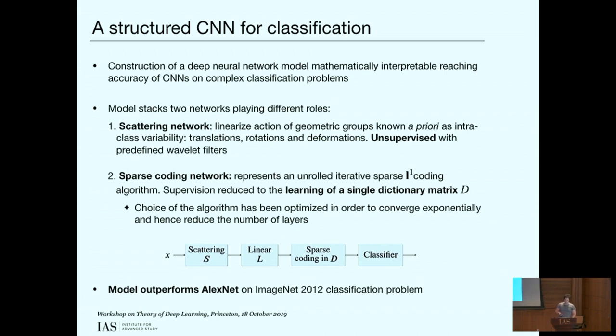To achieve this, we stack two networks playing different roles. The first network is a scattering network whose role is to reduce geometric variability of inputs which may not be informative like translation, rotation, and deformations by linearizing the action of those groups. This network is unsupervised and its weights are predefined wavelet filters. The second network is a sparse coding network, which represents an unrolled iterative sparse coding algorithm. There is supervision in this network, but supervision is reduced to the learning of a single dictionary matrix.